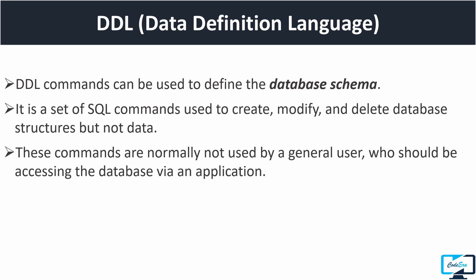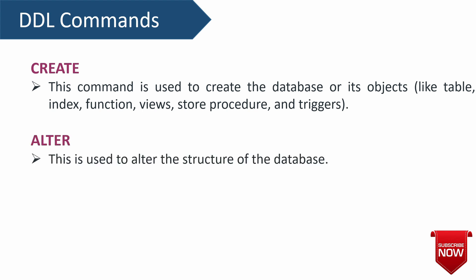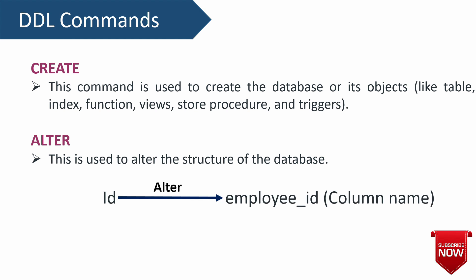When a user interacts with an application, DDL commands are not used by general users, because user actions in an application deal only with the data, not with the database schema or table structure. DDL commands are auto-committed, meaning once you execute the command you can't undo or roll back it. The first DDL command is CREATE, which is used to create databases and objects like tables, indexes, and functions. The next command is ALTER, used to alter the structure of the database — you can modify the existing structure or add new attributes. For example, you can rename a column from 'id' to 'employee_id' or add a new column to an existing table.